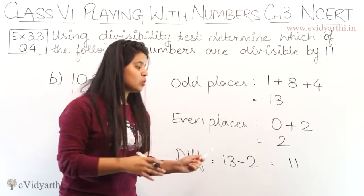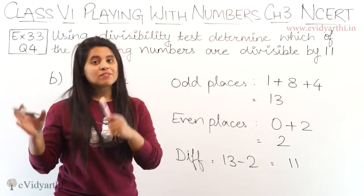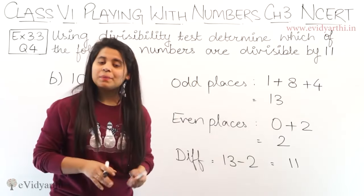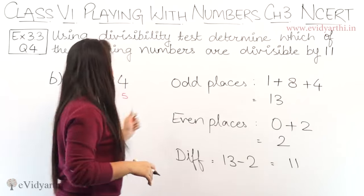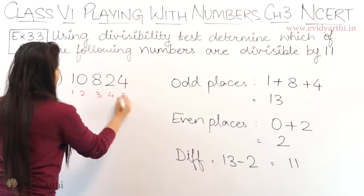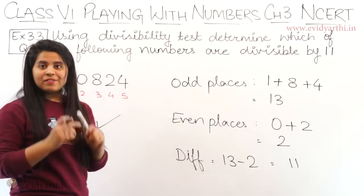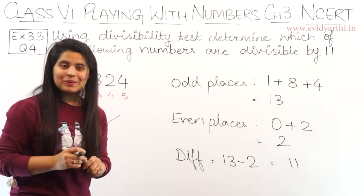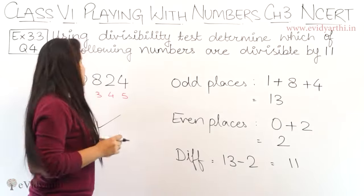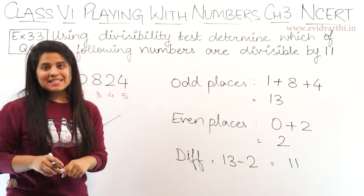Since the difference is 11, and if the difference is 0 or 11, the number is divisible by 11. This means the whole number 10824 is divisible by 11. So, this was the B part.